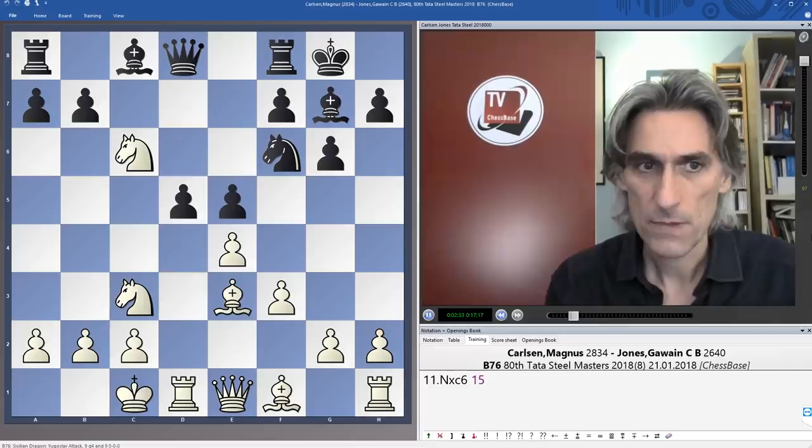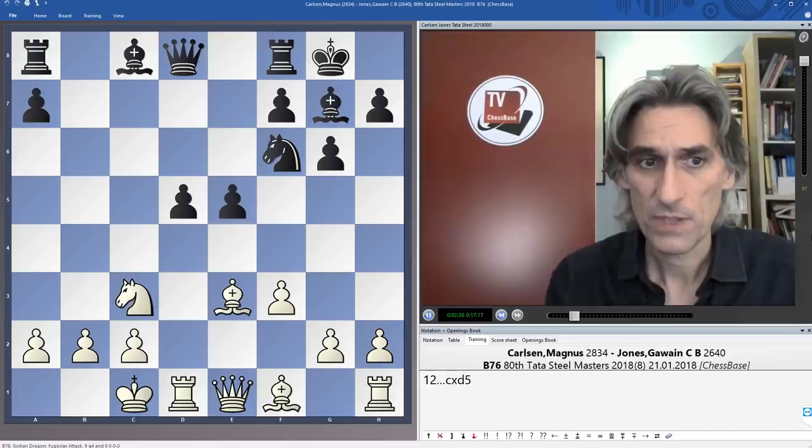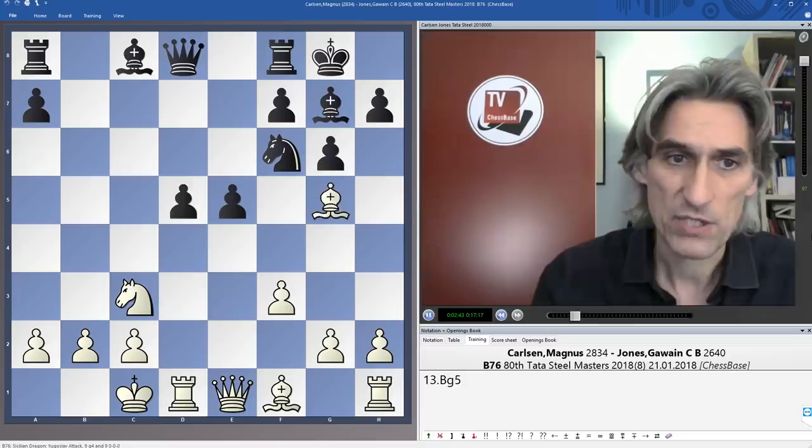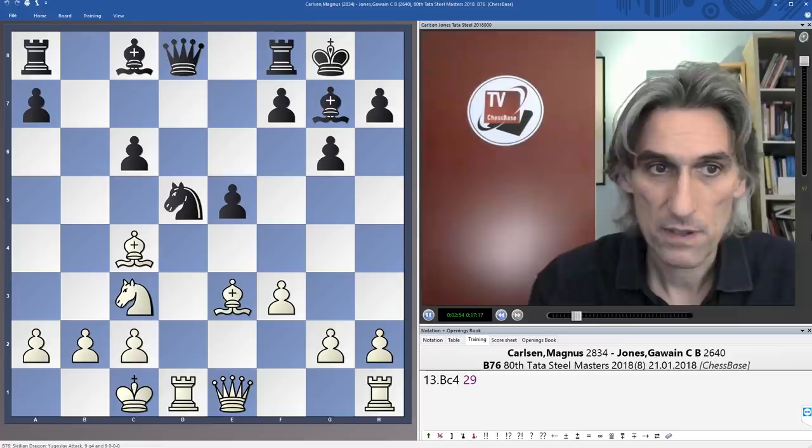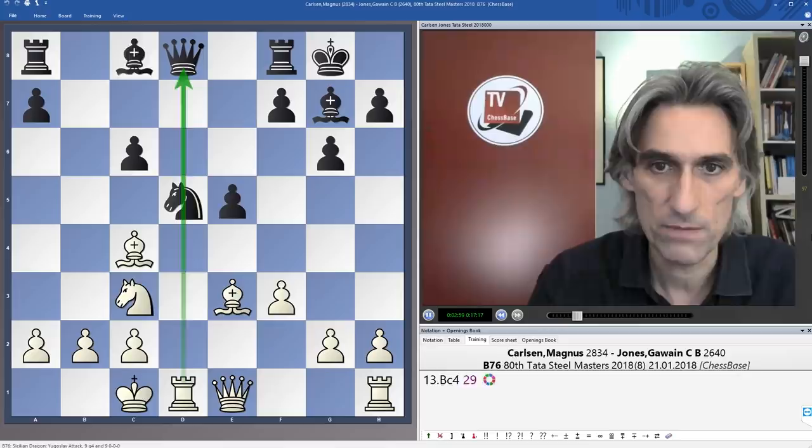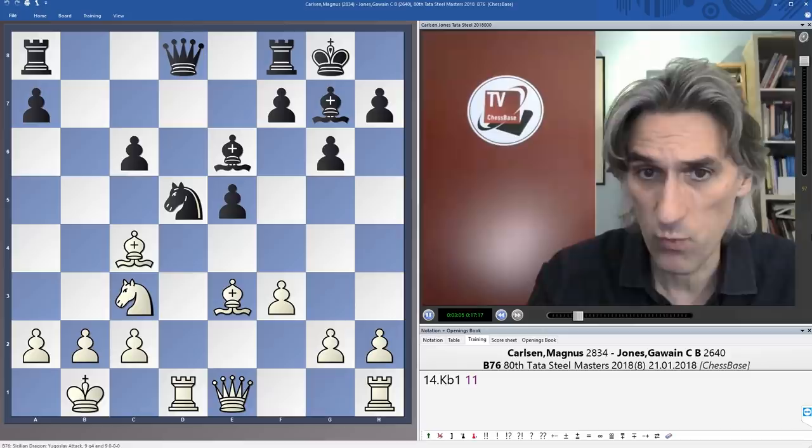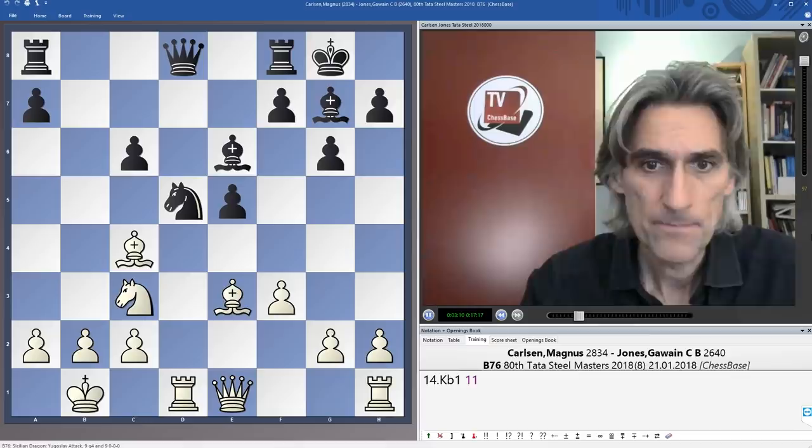e5 from black, take on c6 and take on d5. And if c takes d5, then bishop g5, and this is well known to be better for white. But instead, knight takes d5, so this is the main line. And then bishop c4, knight e4. So there's this pin on the d5, and this is a very important theme in this position. Now the main move here is knight e4, but Carlsen played king b1, which is also very reasonable.